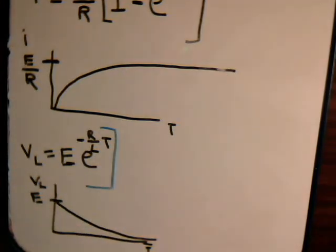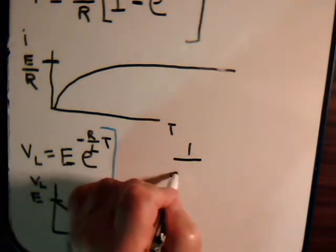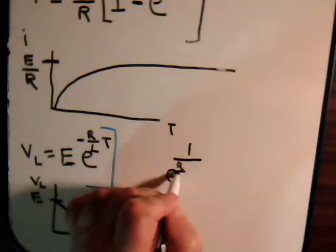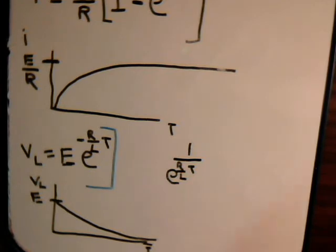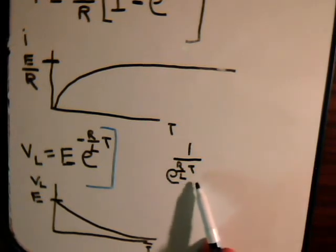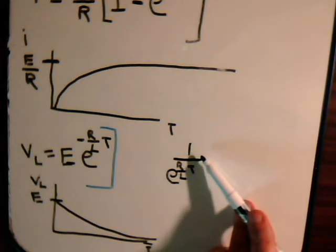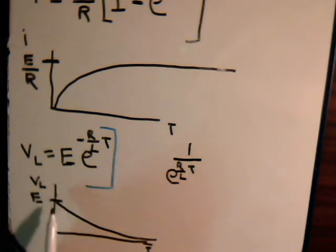So we have 1 over e to the R over L times t. R and L is constants, but again, as time increases, this denominator here gets larger and larger. So this whole fraction gets smaller and smaller. So we're multiplying E by a smaller and smaller number until finally it just falls off to zero.